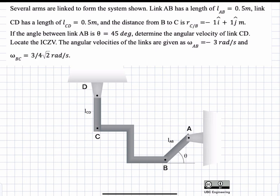In this problem, we have three arms linked together. We have arm AB at a 45 degree angle, arm BC with an intricate shape, and arm CD vertical. We're given the dimensions of these arms, and we know that arm AB and BC have a set angular velocity. We're asked to find the angular velocity of arm CD and the location of the instantaneous center of zero velocity of arm BC.